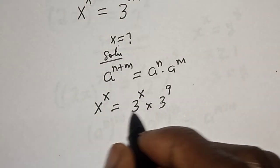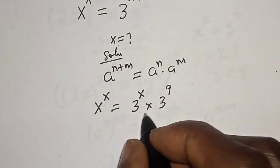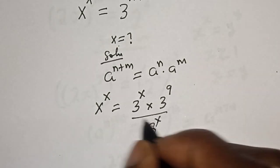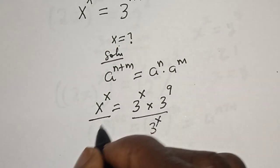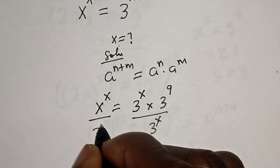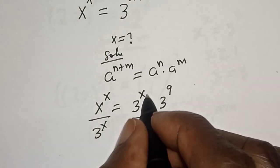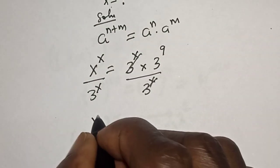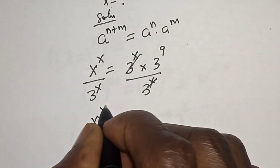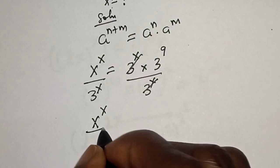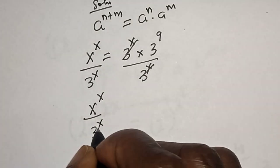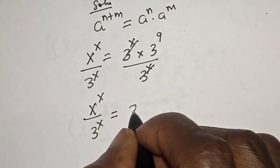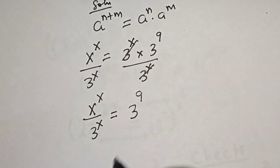Now let's divide both sides by 3 to the power of X. This will cancel, and we have S to the power of S divided by 3 to the power of S is equal to 3 to the power of 9.